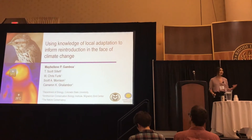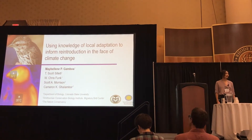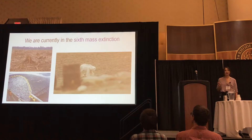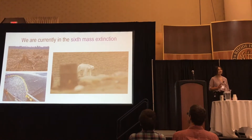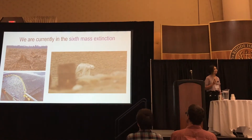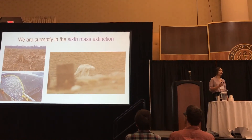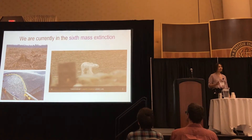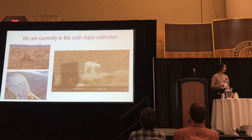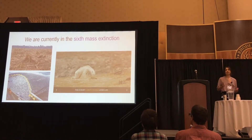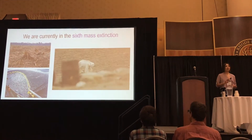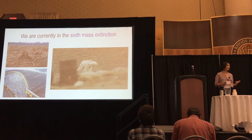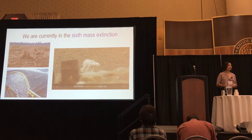And before we begin, I'd like to start off with a little lighthearted news. In case you didn't know, we currently exist in the sixth mass extinction of our world. And this is largely due to human interference — over-exploitation, habitat degradation, and introduction of invasive species.